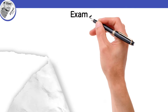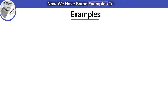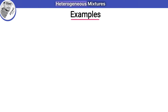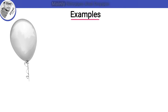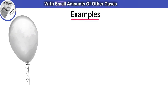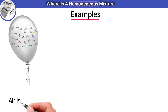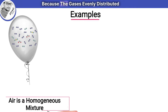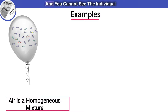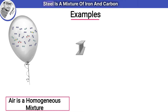Now we have some examples to understand homogeneous and heterogeneous mixtures. Air is a mixture of gases — mainly nitrogen and oxygen with small amounts of other gases. Air is a homogeneous mixture because the gases are evenly distributed and you cannot see the individual gases in air.